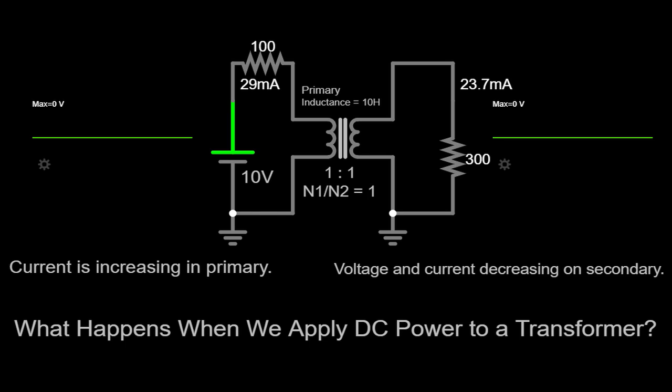Hello everyone, and welcome to our video today. In this episode, we will explore an intriguing question: what happens when we supply direct current, or DC power, to a transformer?